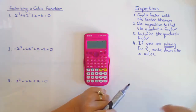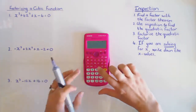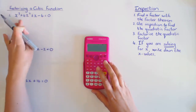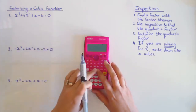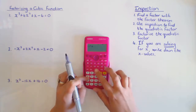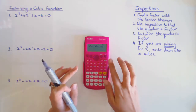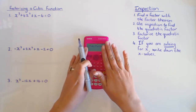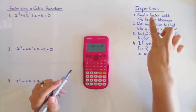All three methods start off the same by finding a factor with the factor theorem. If I substitute a value and I get zero into my function, then x minus that value I substituted is a factor of my function. I'm going to take x cubed plus four x squared plus x minus 6 on my calculator and look for something I substitute that gives me zero. This first step is always the same for all methods.